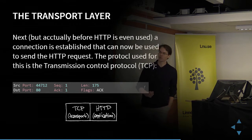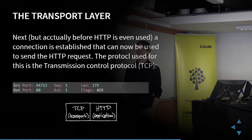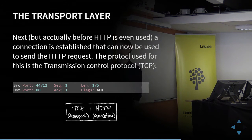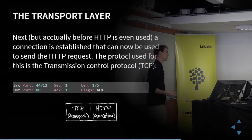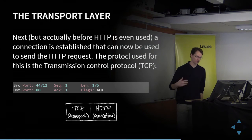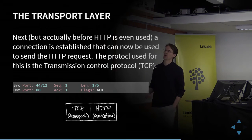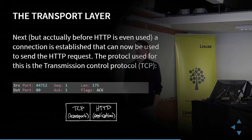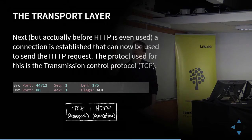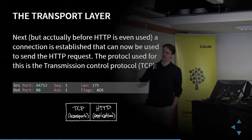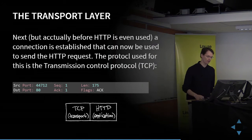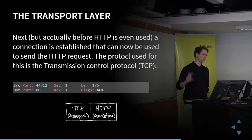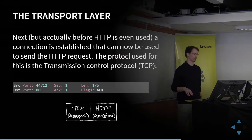Then we have the flags — we'll look at those shortly. This message only has the acknowledgement flag, the most common flag, which says: I've received and I'm ready to get the data indicated in the acknowledgement field. This TCP header is added to the message, so now we have the HTTP header and the TCP header.